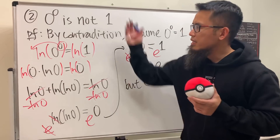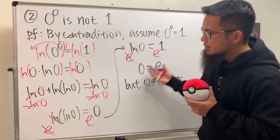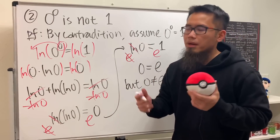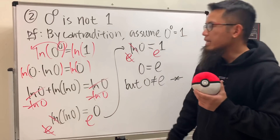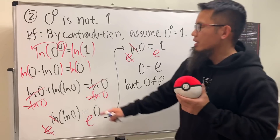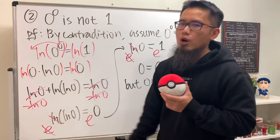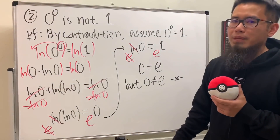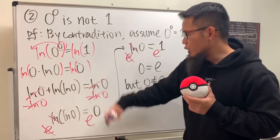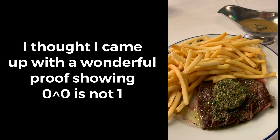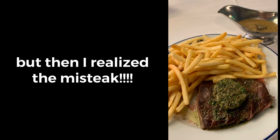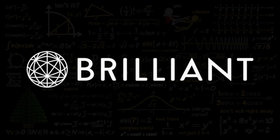The truth is: proof two is actually the false proof among the three. Why? Because the moment you have ln(0), it's undefined — so the rest of the computation in proof two simply doesn't make sense.